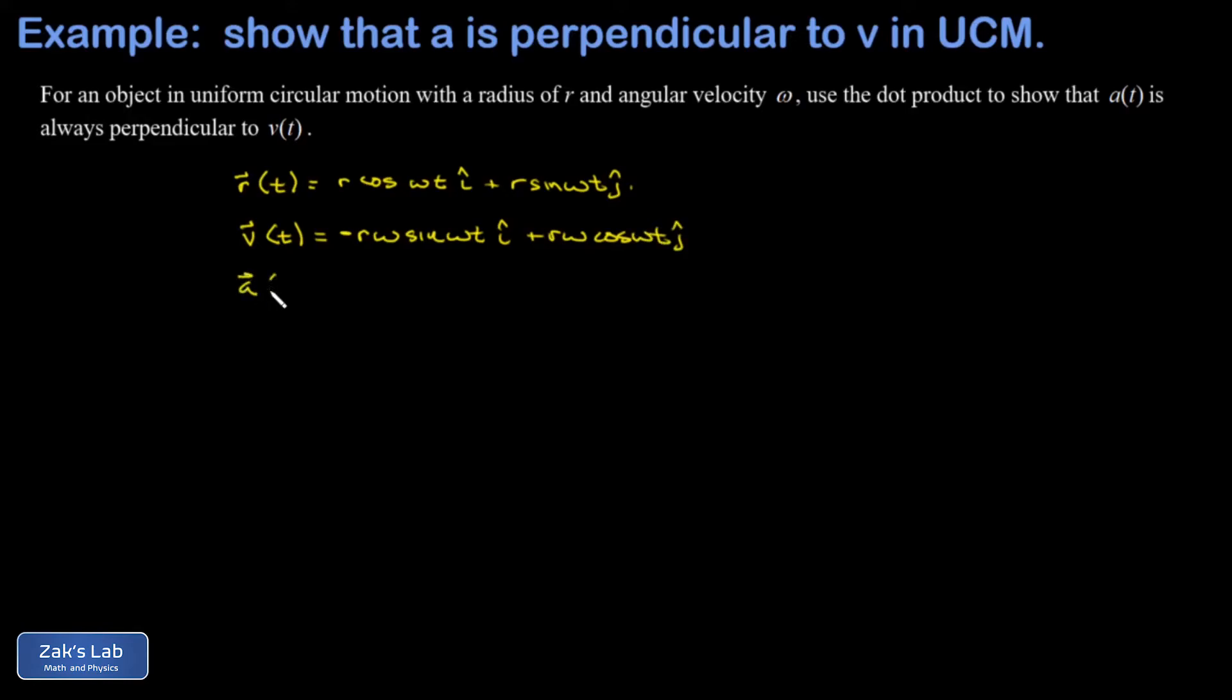Then my acceleration vector for any moment in time is found by taking another time derivative. And the chain rule produces another factor of omega. And I end up with negative r omega squared cosine omega t i hat minus, because I'm differentiating the cosine in the second term, r omega squared sine omega t j hat.